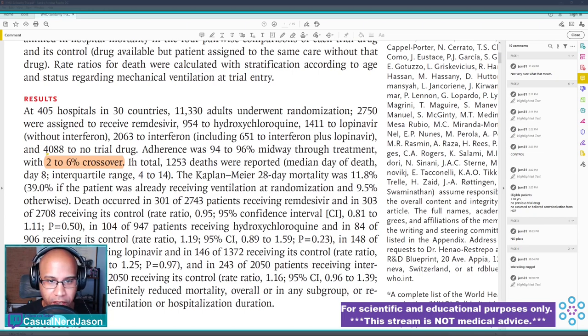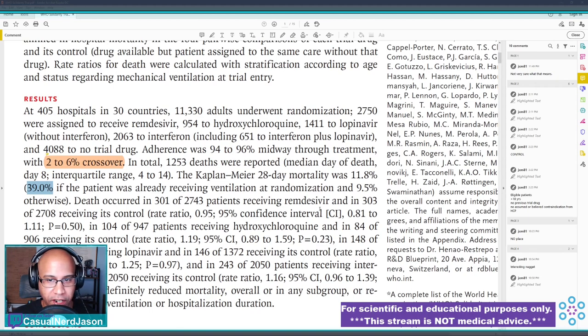In total, 1,253 deaths were reported. The Kaplan-Meier 28-day mortality was 11.8%. This is interesting. It jumps - it's almost four times as much if the patient was already on a ventilator. That's unfortunate. So it seemed like during this time when patients were on ventilators, they're in very bad shape. And 9.5% otherwise. So 9.5% if they were not. It was a little lower if they were not on a ventilator, but it was already super high if they were on a ventilator already.